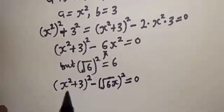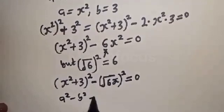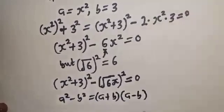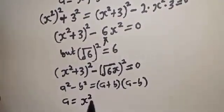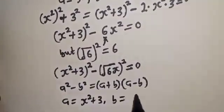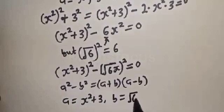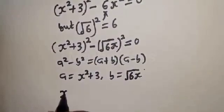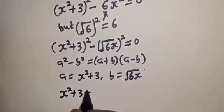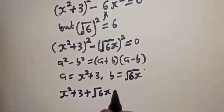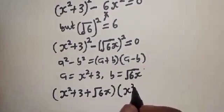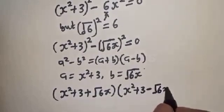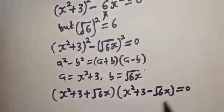Now if you look at this, this is a perfect square difference. Using a² minus b² equals (a + b)(a − b), where a equals x-squared plus 3 and b equals root(6) times x, we substitute to get: (x-squared plus 3 plus root(6)·x)(x-squared plus 3 minus root(6)·x) equals 0.